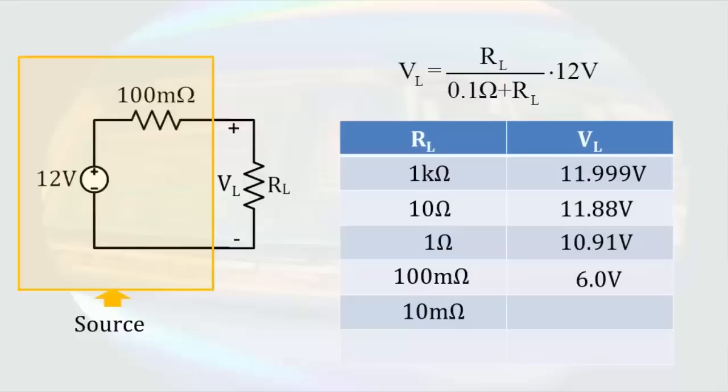If we put an even smaller resistance for the load, like 10 milliohms, our output dips to just over a volt. And of course, if we put a zero ohm resistance out there, which is the equivalent of a wire, we get zero volts at the output.